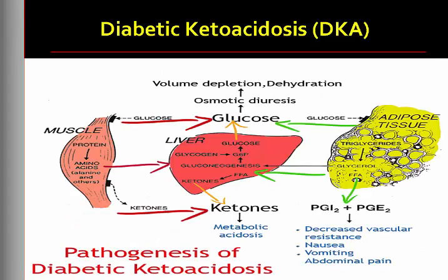Dehydration occurs in diabetic ketoacidosis with symptoms of poor skin turgor, dry mucous membranes, tachycardia, and orthostatic hypotension. Early symptoms may include lethargy and weakness. As the patient becomes severely dehydrated, the skin becomes dry and loose, and the eyes become soft and sunken.